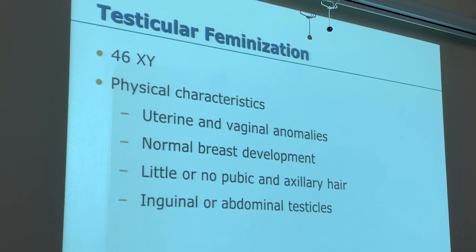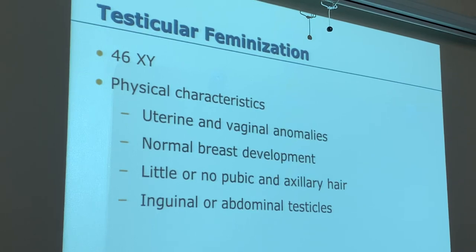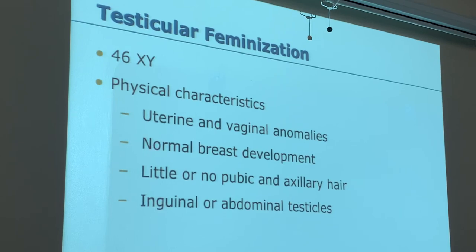A uterus may never grow and always remain infantile or prepubertal. Alternatively, vaginal atresia can occur, meaning the vagina never fully develops.